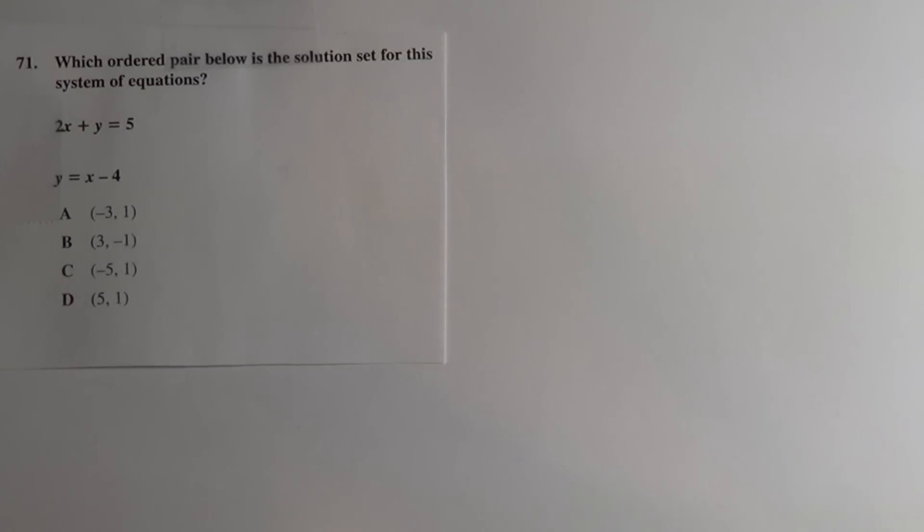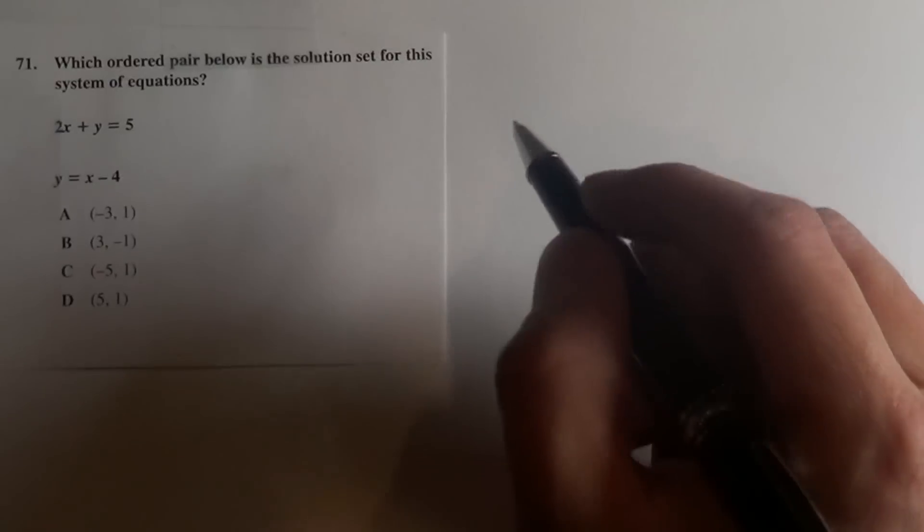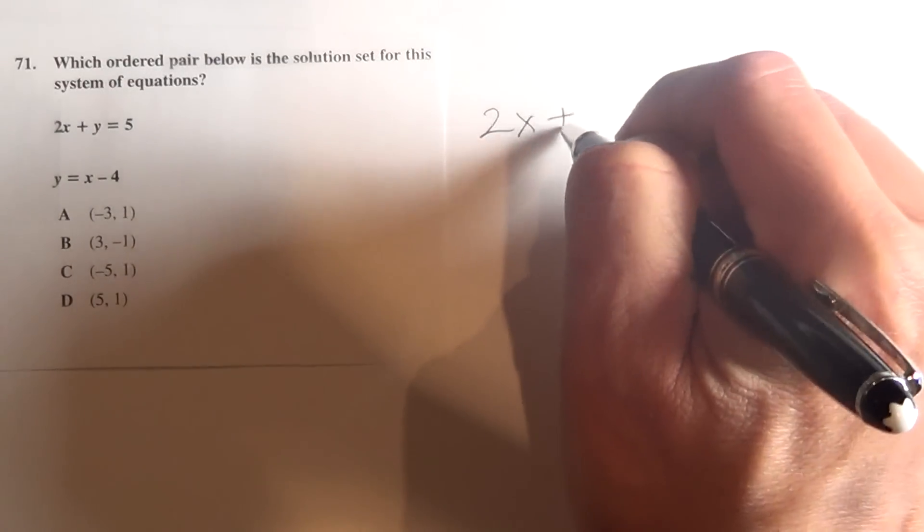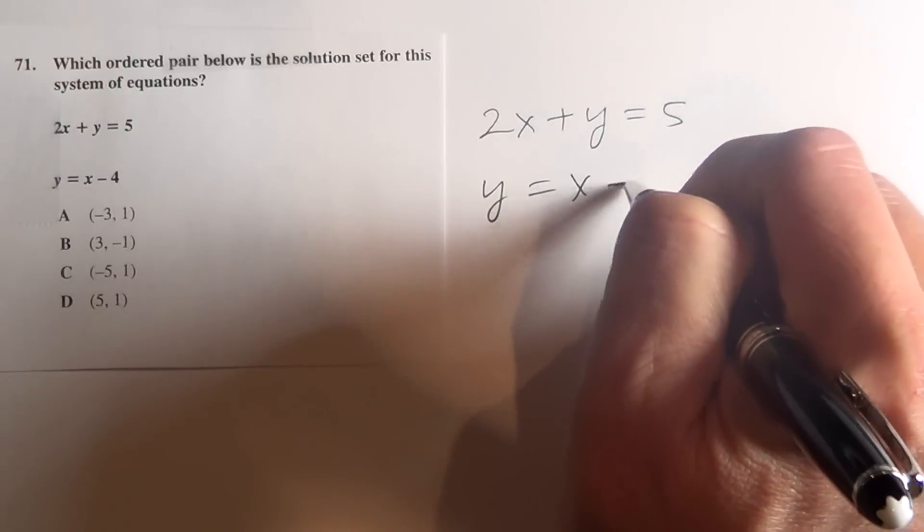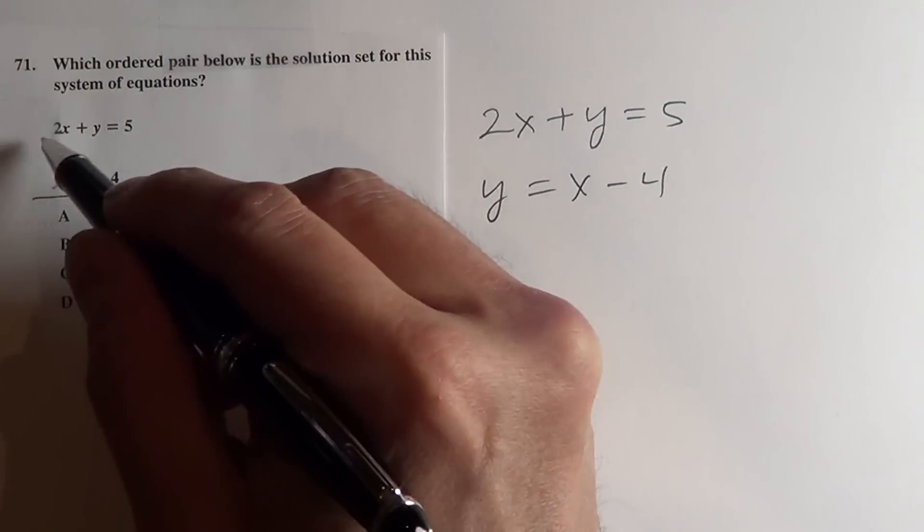In this problem it says, which ordered pair below is the solution set for this system of equations? So it gives you two equations: 2x plus y equals 5, and y equals x minus 4. I just copied it from right here.